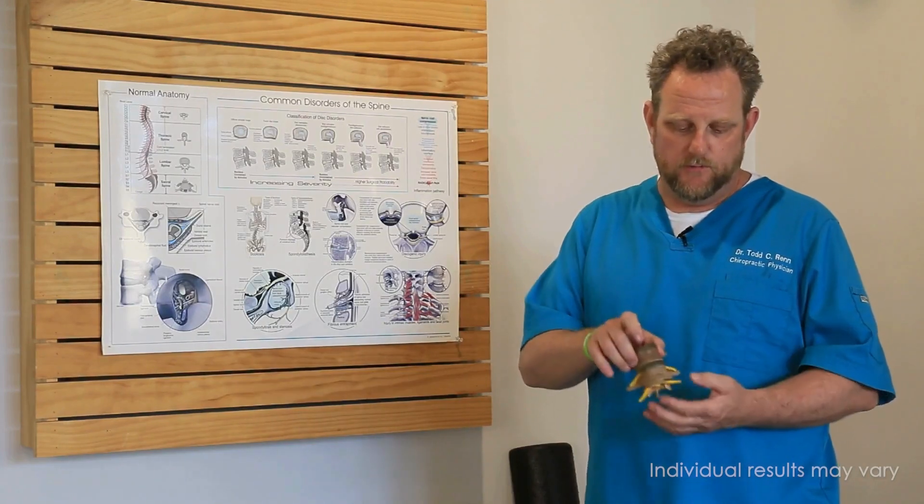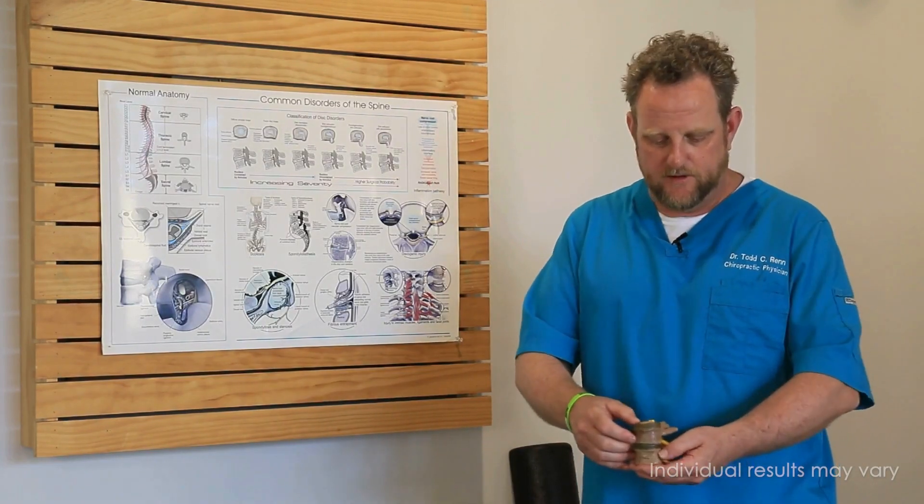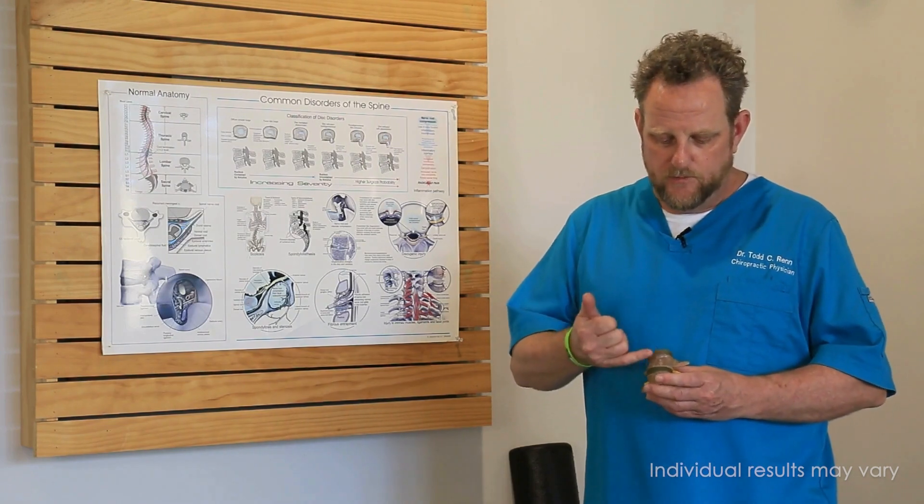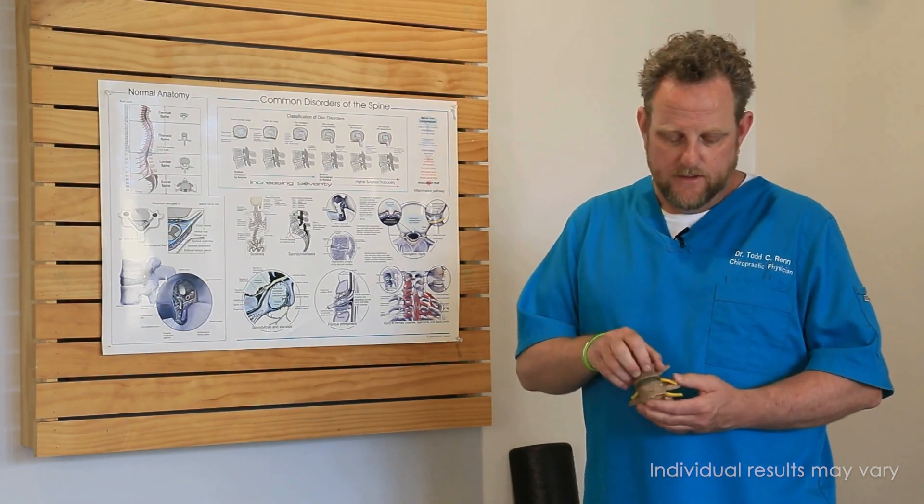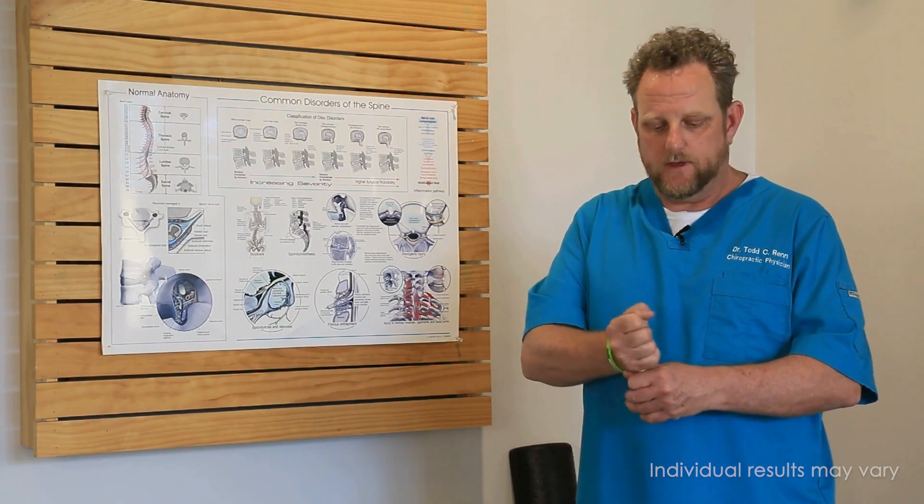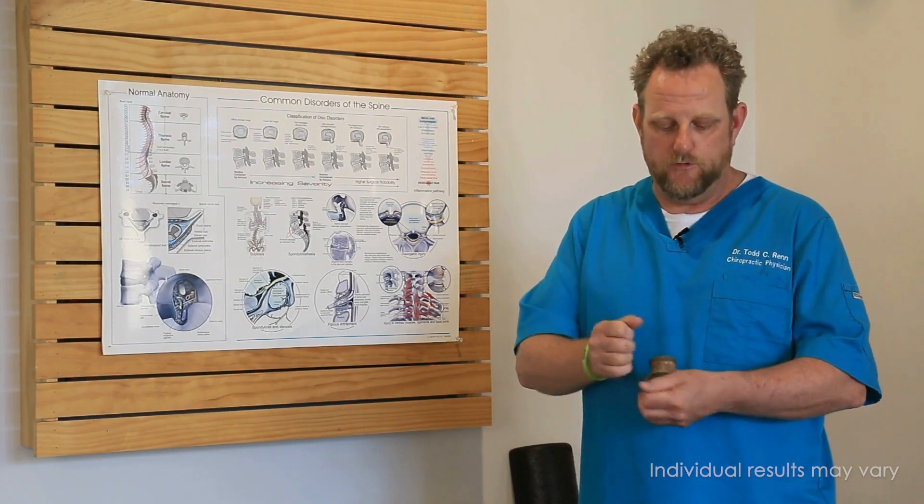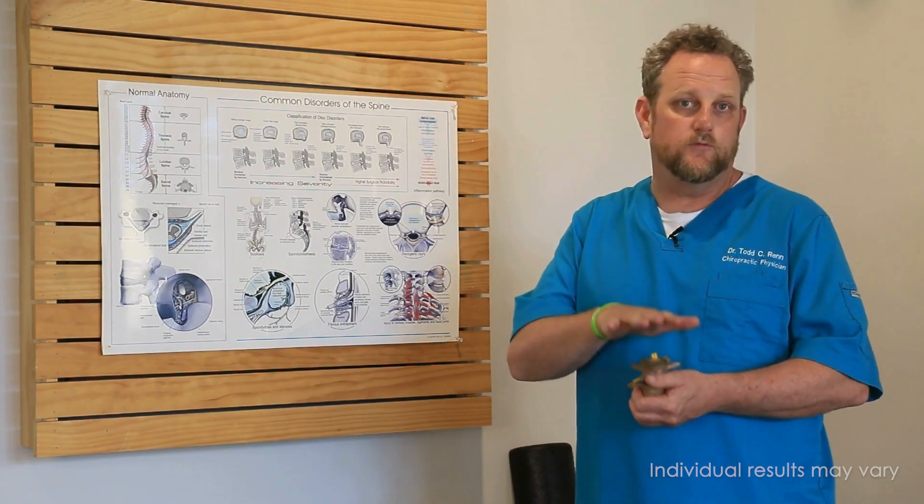What we have here is a normal vertebrae from the lumbar spine, as if I'm pulling it out of me right here. Each vertebrae sits on a disc. It's like a ball bearing - it allows movement and acts as a shock-absorbing cushion.